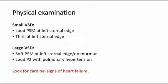For physical examination, in small VSD we can hear a loud pansystolic murmur at the left sternal edge, and also palpate for a thrill at the left sternal edge. Whereas for large VSD, the pansystolic murmur is also at the same area but will be softer, and sometimes there is no murmur heard. There might also be a loud P2 with pulmonary hypertension. The reason why small VSD has a louder murmur is because the hole is smaller, so the turbulence of blood flow is greater, causing a greater heart murmur.